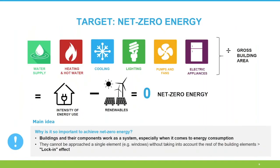Another thing I would like to highlight is the depth of energy efficiency measures needed to achieve the carbon reduction targets set at national and international level. One of the most important concepts regarding energy consumption in buildings is the net zero energy concept. This means that the energy needed in the building for water supply, heating, hot water, cooling, lighting, and electrical appliances divided by the building surface must be zero. In other words, the energy use intensity minus renewables must equal zero — net energy. It should be noted that the concrete definition and values to calculate this formula vary across countries and regions, even within EU member states.